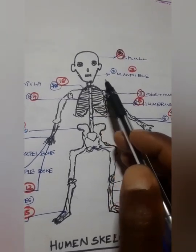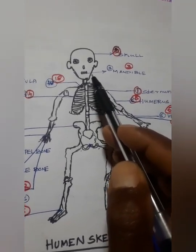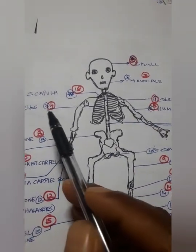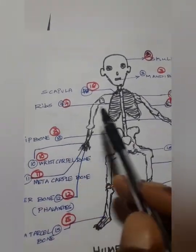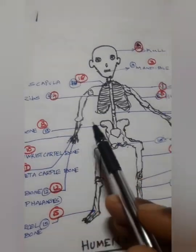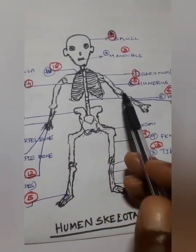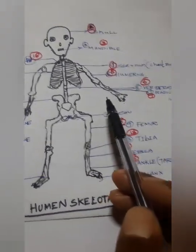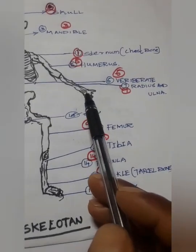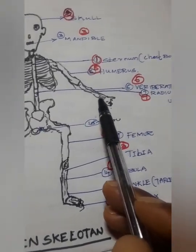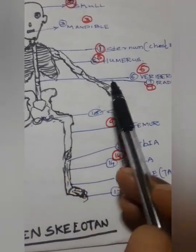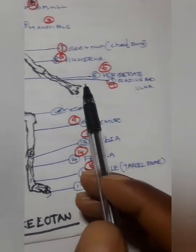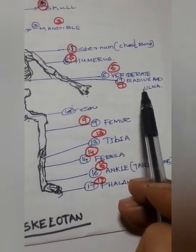Number 3: mandible — below the teeth. Number 4: ribs. Number 5: humerus. Number 6: vertebrae. Number 7: radius — and how long the hand bone is.